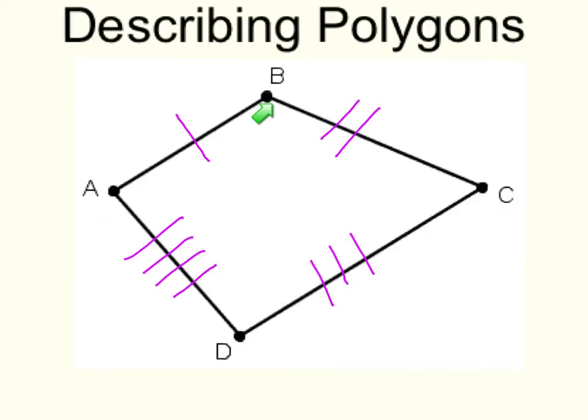So, none of these angles have the same measure. We're going to mark those with different numbers of arcs to show that none of them are the same length. Here's angle A, angle B, angle C, and angle D. And that shows that they all four have different measurements.